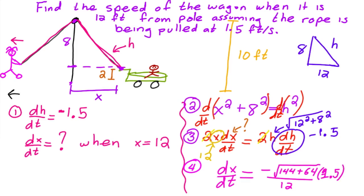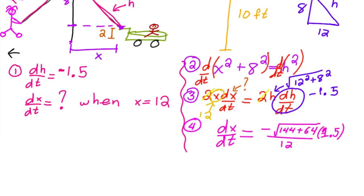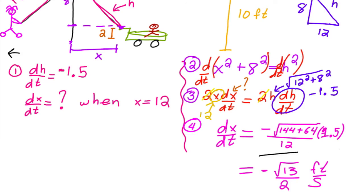This equals negative square root of 13 over 2, in feet per second. The answer is negative because the distance x is decreasing — that's why it's negative. And that's it!